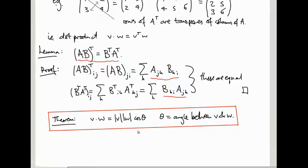In the last video we were working towards the proof of this theorem that the dot product of V and W is the length of V times the length of W times the cosine of the angle between them. We just proved this nice fact that if you take AB transpose, the product AB, that's the same as doing B transpose A transpose. Remember also the relevance of this is that the dot product can be rewritten as V transpose W.